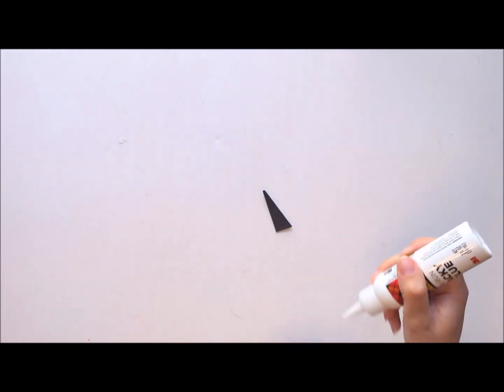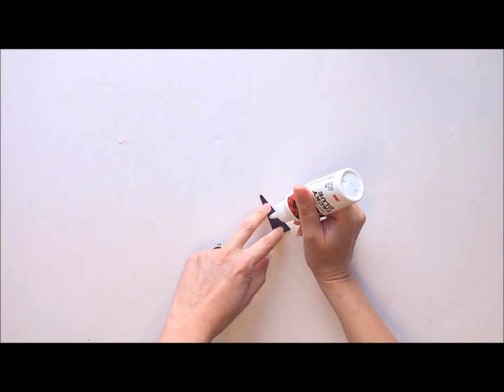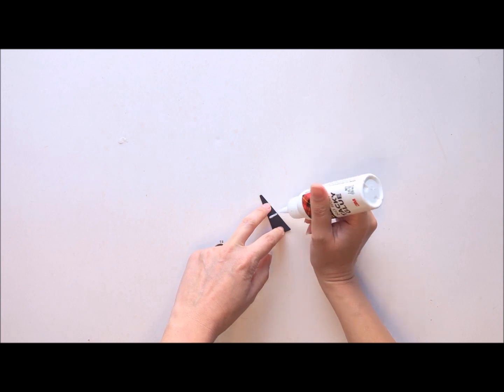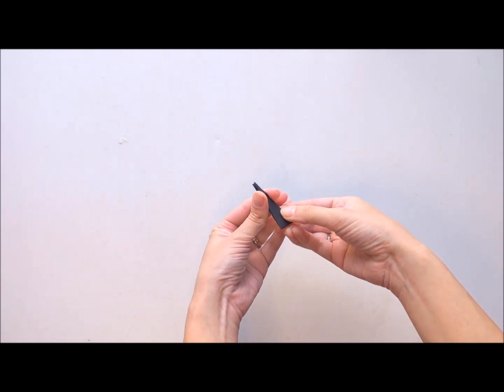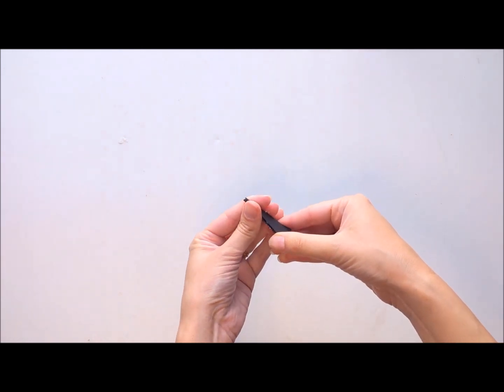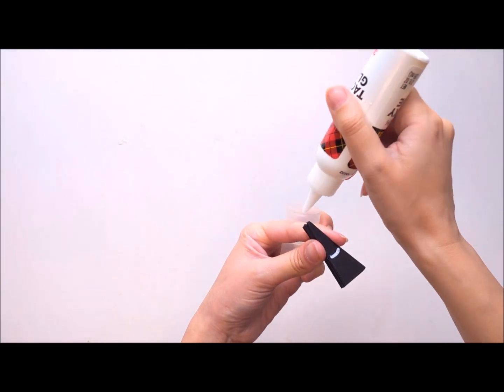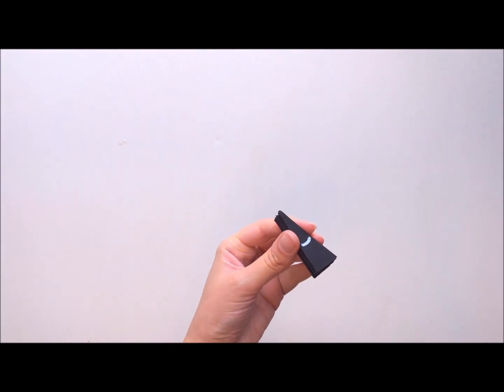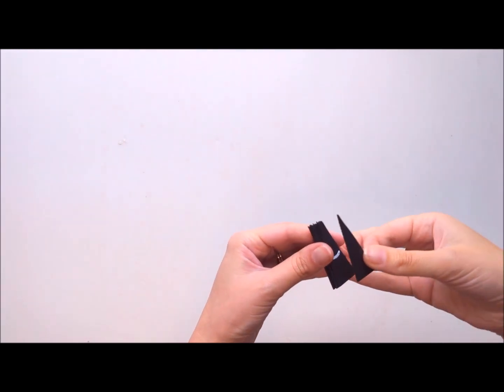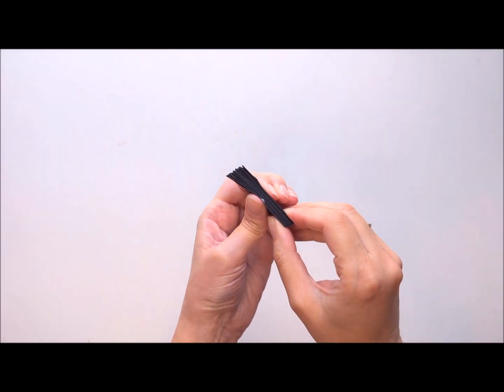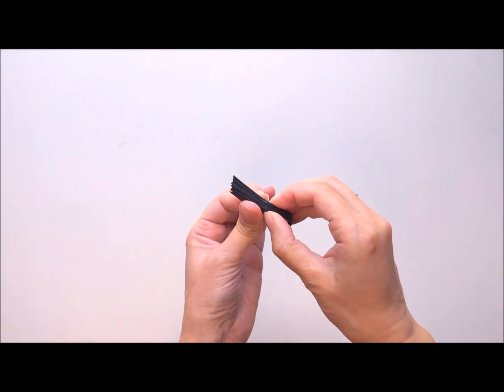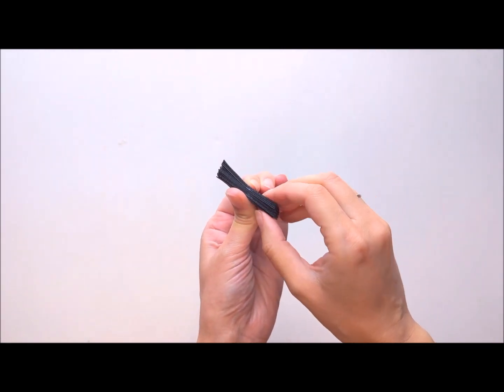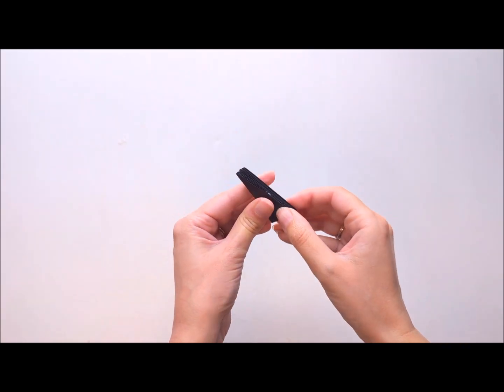And then you're going to repeat that again. You're going to put another little line of glue right along the middle. You're going to stick another one of your pieces on top, getting those aligned. And you're just going to repeat that until you have all 16 pieces stacked and glued together. And when you're done gluing all 16 pieces together, you're going to end up with a little stack that looks like this. You have all the folded edges aligned, and they're all stacked on top of each other.